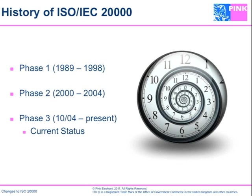In 2003, ITSMF was asked to develop a certification scheme around BS 15,000, and in February 2004 three organizations were certified under it. In October 2004, a submission was made to ISO to fast-track acceptance of BS 15,000 as an international standard. At the international meeting in May 2005, the international community voted to accept the fast-track submission, such that by December of that year, ISO 20,000 Parts 1 and 2 were published as the initial standards. By 2006, Working Group 25 was stood up and began its work specifically on Part 3.